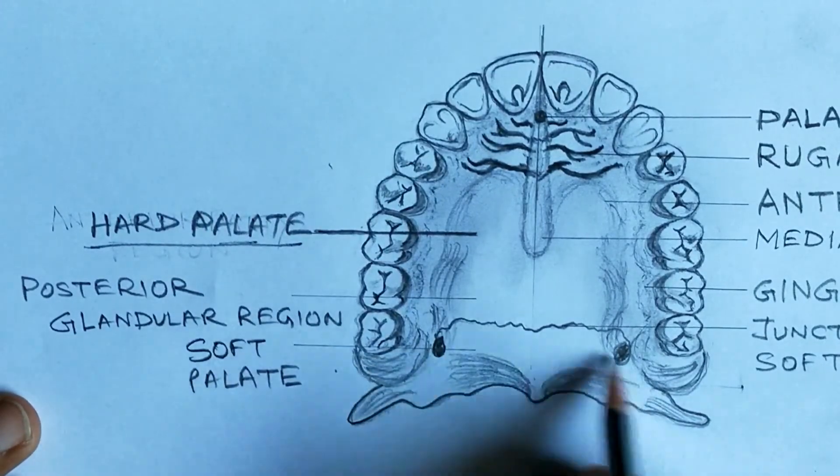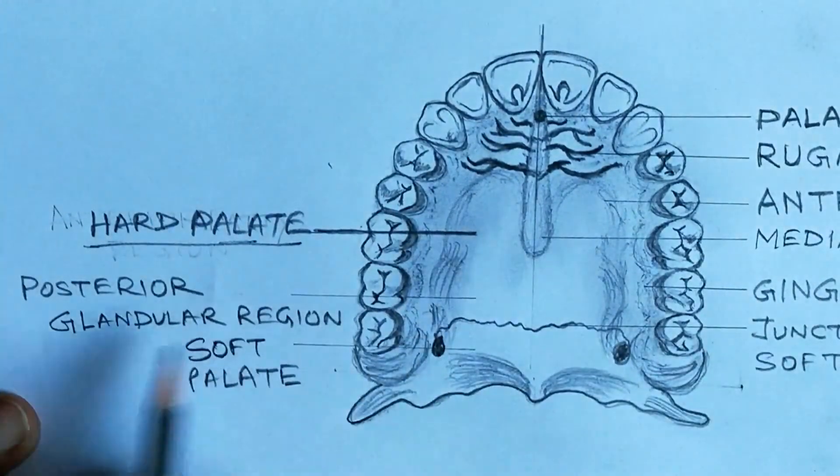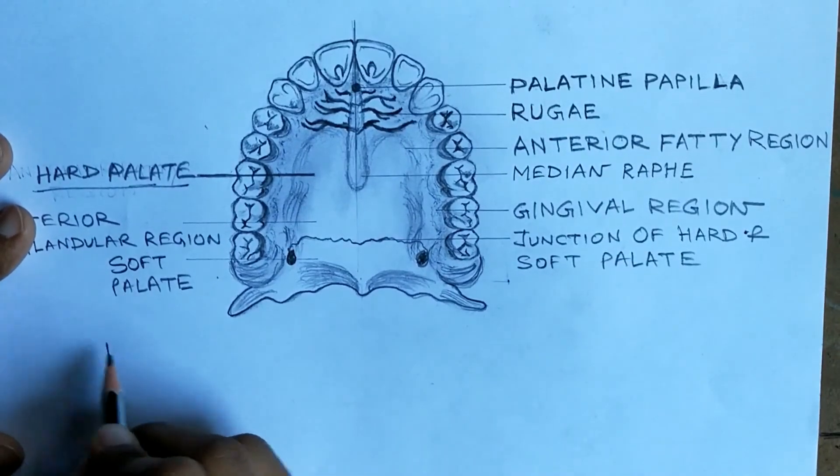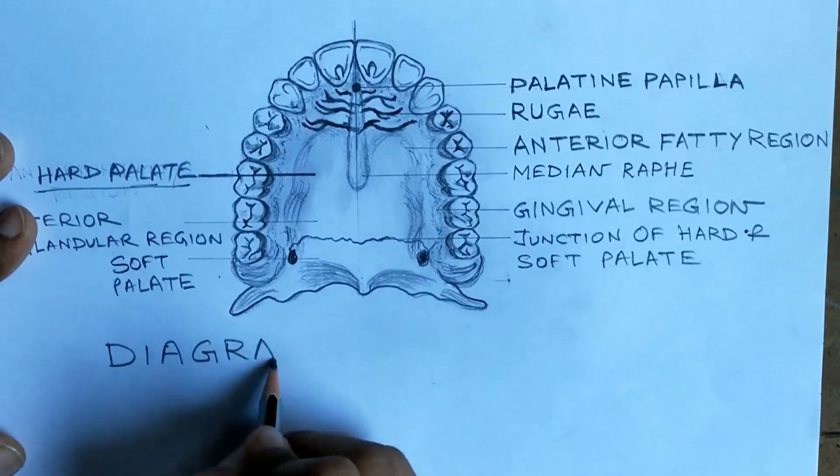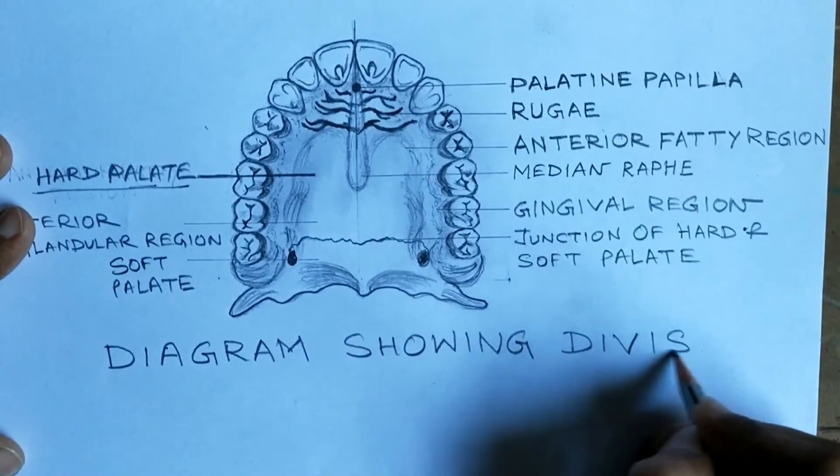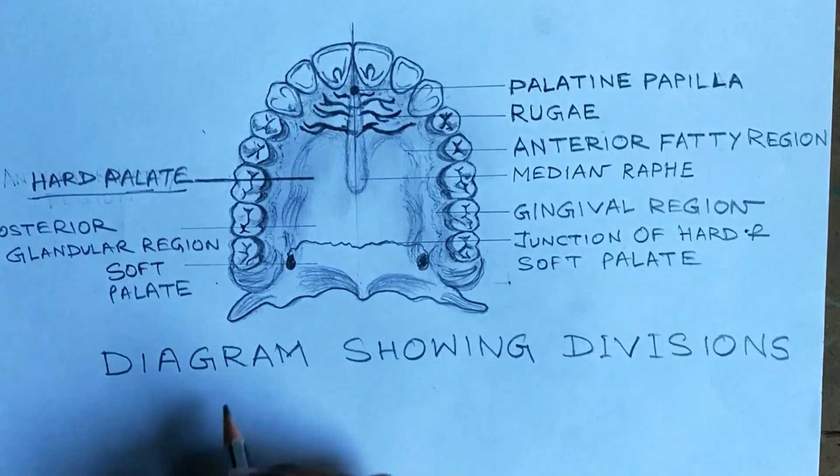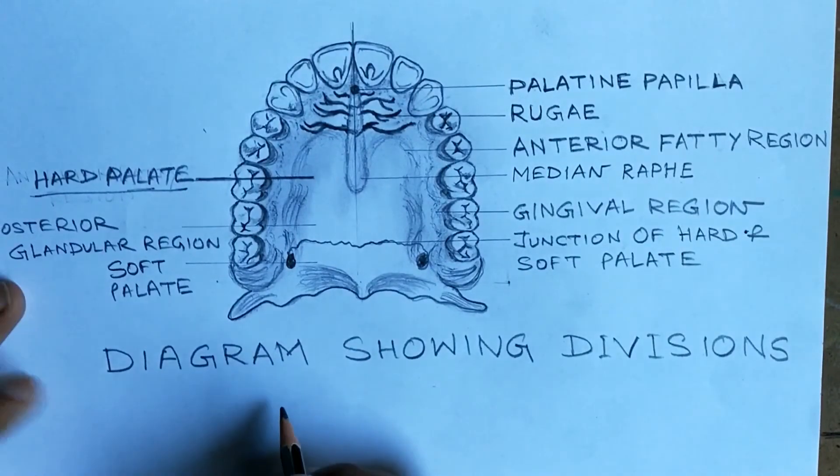Here's the hard palate, the total portion of hard palate. Here's the soft palate. This area is the soft palate. This is a diagram showing the divisions of the hard palate.